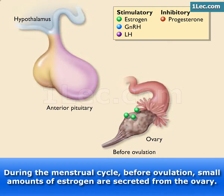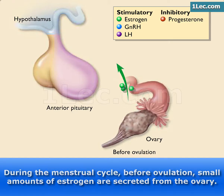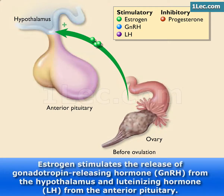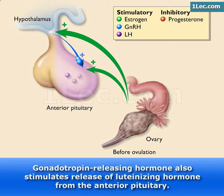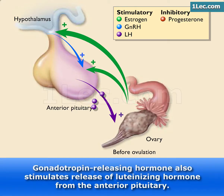During the menstrual cycle, before ovulation, small amounts of estrogen are secreted from the ovary. Estrogen stimulates the release of gonadotropin-releasing hormone from the hypothalamus and luteinizing hormone from the anterior pituitary. Gonadotropin-releasing hormone also stimulates release of luteinizing hormone from the anterior pituitary.